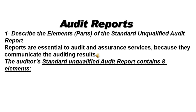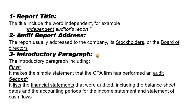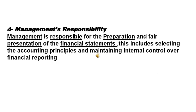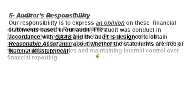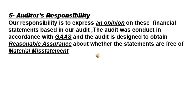The elements of the standard unqualified audit report include eight elements: number one, report title; number two, audit report address; number three, introductory paragraph; number four, management responsibilities — management is responsible for the preparation and fair presentation of the financial statements; number five, auditor responsibility — our responsibility is to express an opinion on these financial statements based on our audit.